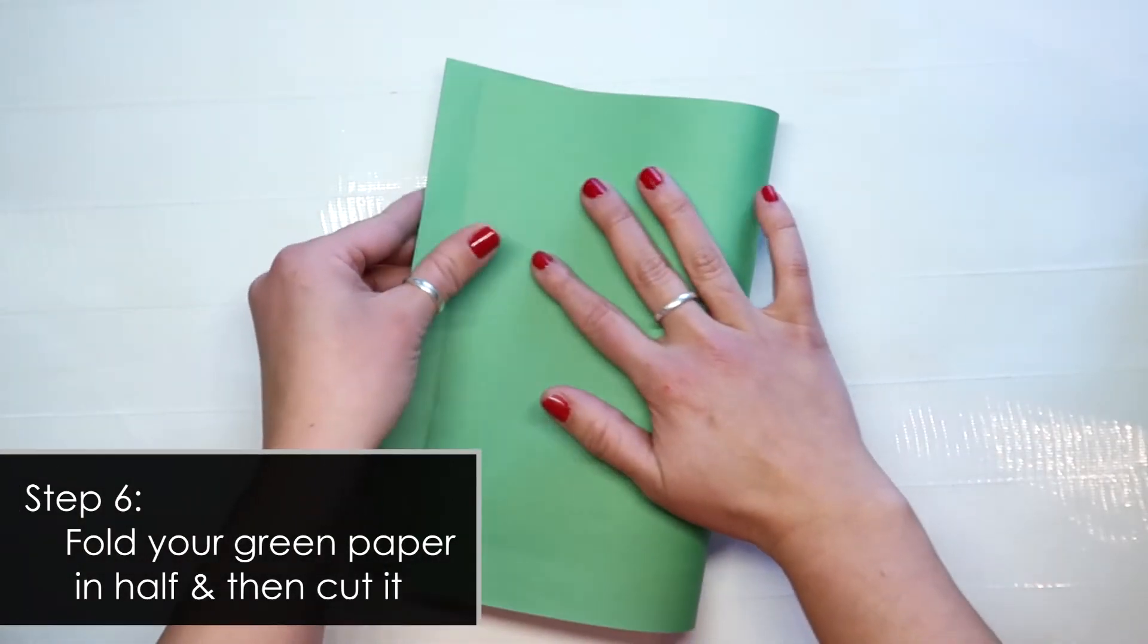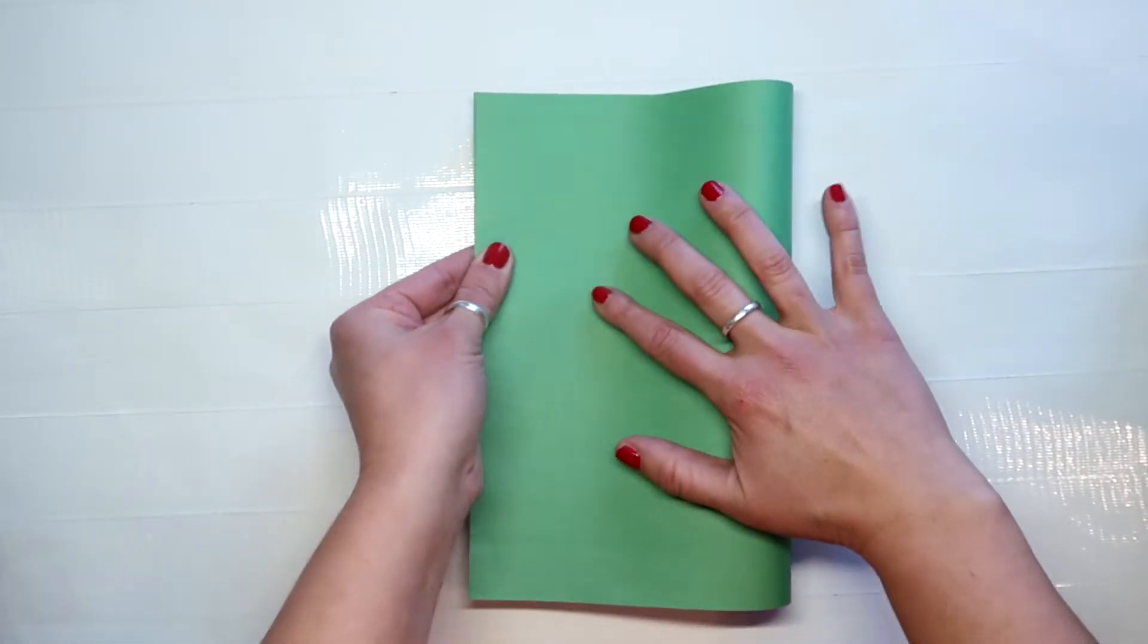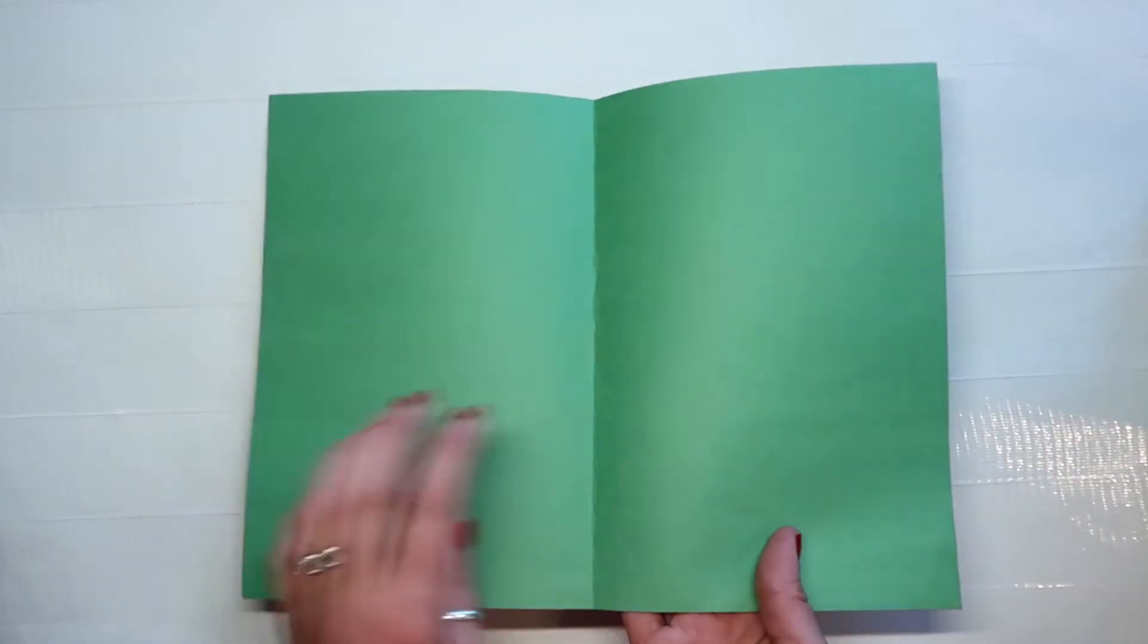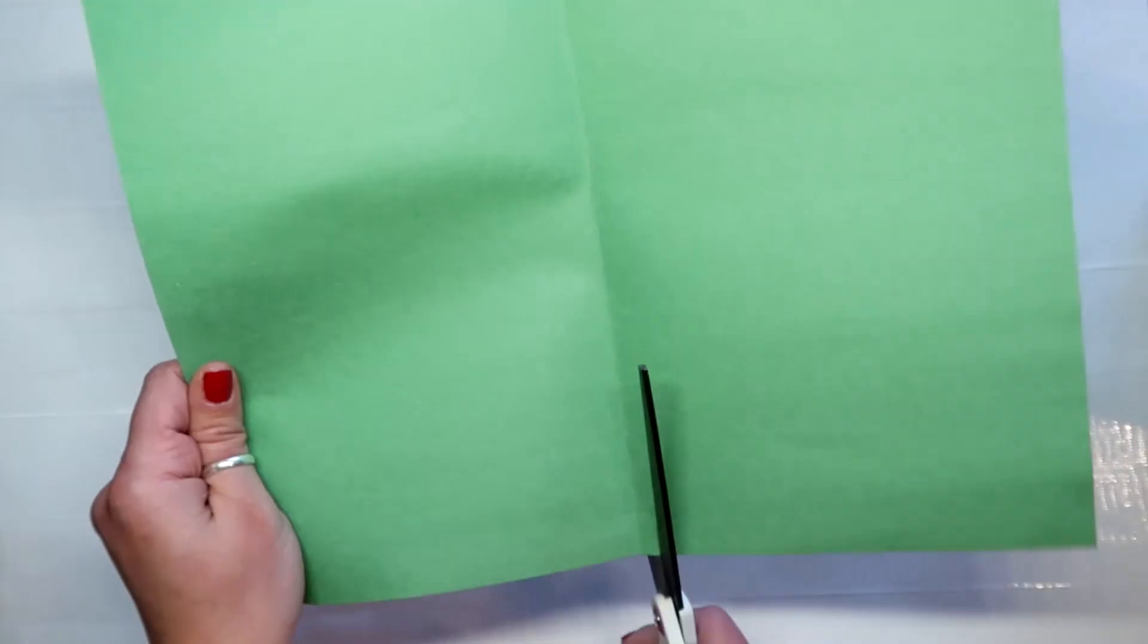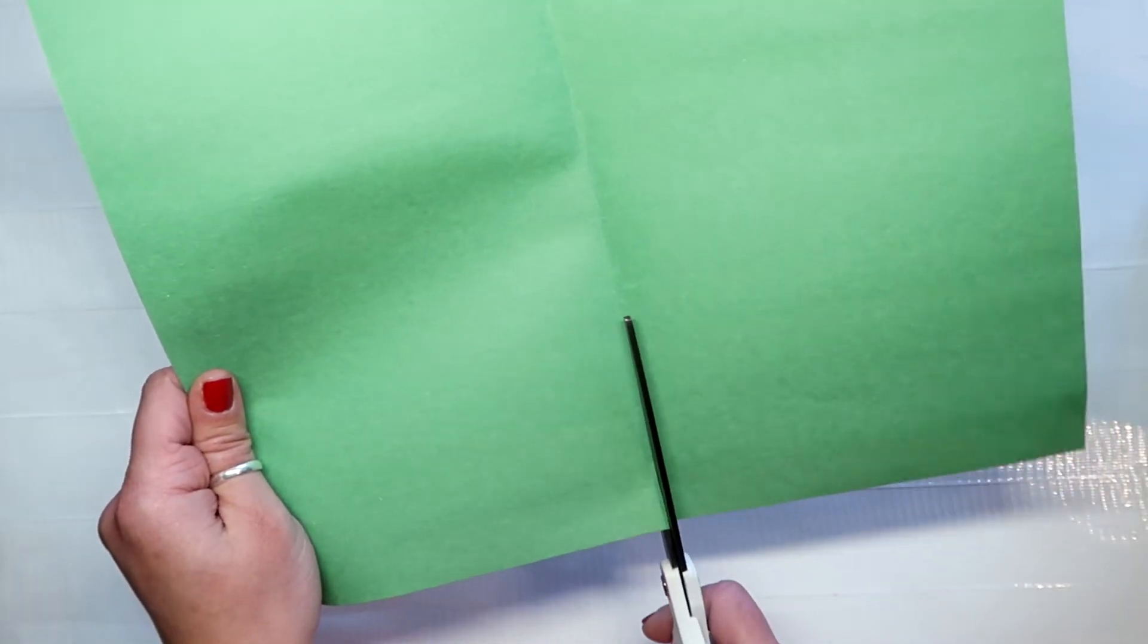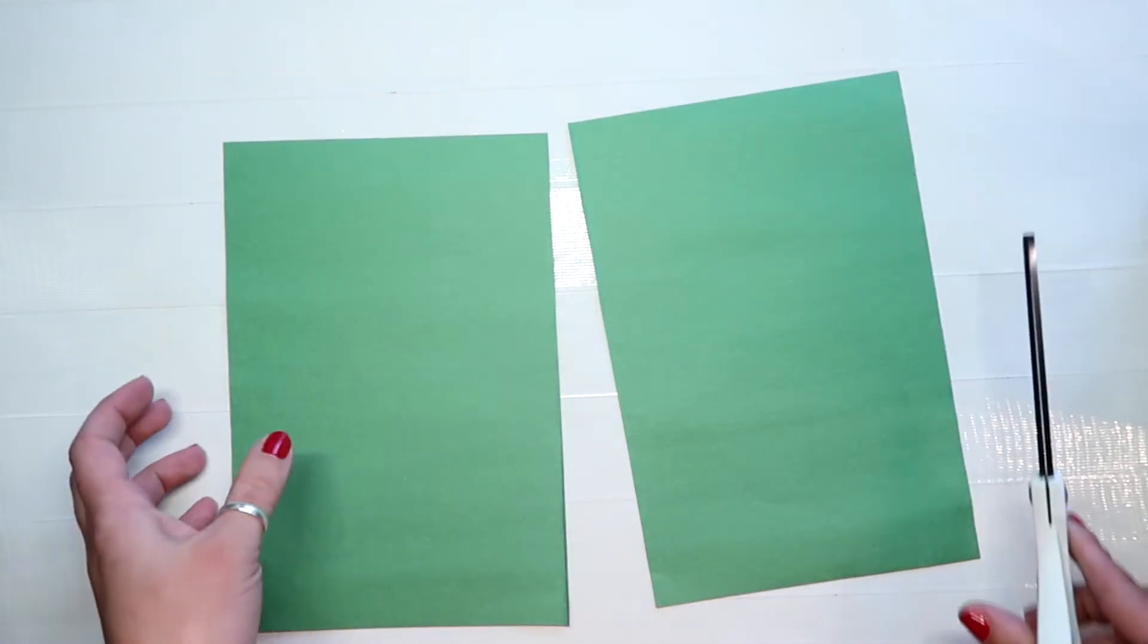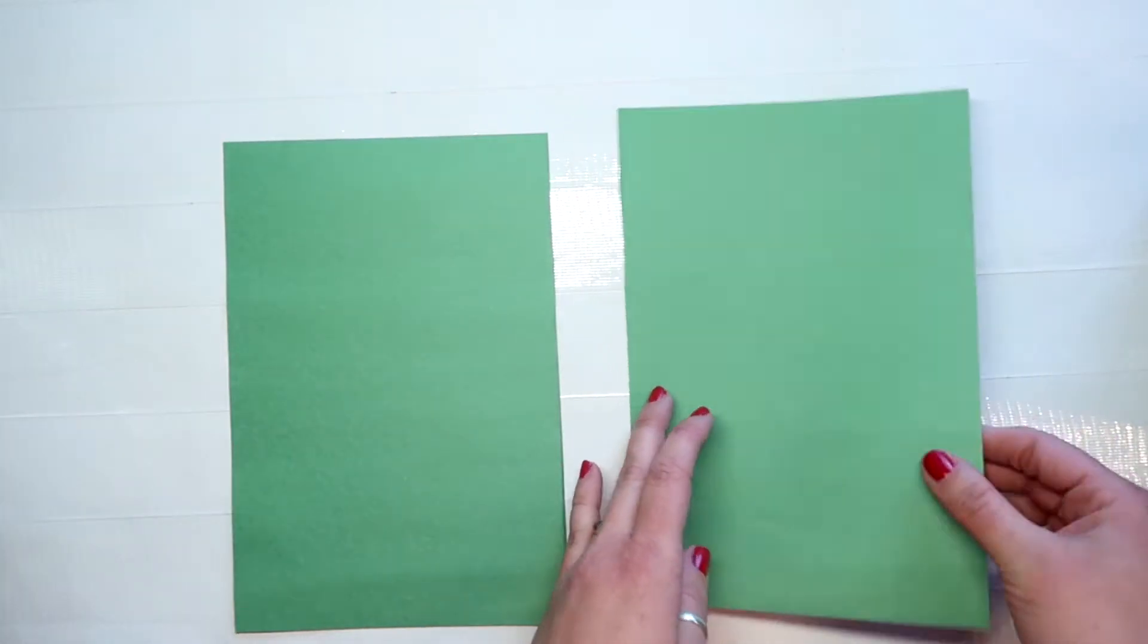So take your green paper and we're going to first fold it in half. You don't need to crease this too much because we're actually just making a line so we can cut it. So we're going to cut this down the center and we are going to end up using both of these sheets but we're going to start with one at a time.